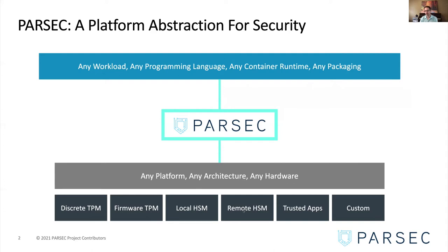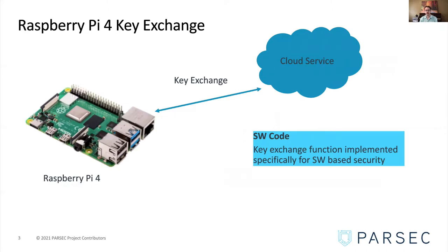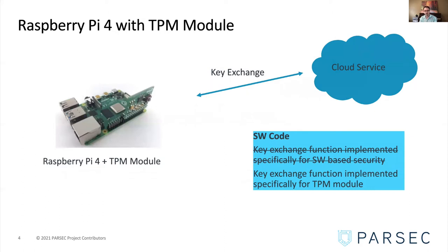Let's consider an example to showcase the flexibility that PARSEC brings to a system. We'll take a Raspberry Pi and a need to implement a key exchange between a cloud service and the end device. As a developer, you can implement this feature directly and be up and running fairly quickly. But what happens if you need to harden your solution and protect the keys in a hardware root of trust like a TPM? At this point, you might decide it's easier to code to the new security interface and re-implement the security functions tied to that hardware module. You'll realize it's a lot of work and complicated to implement even a simple function such as key exchange with the TPM interface.